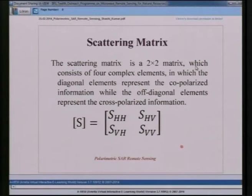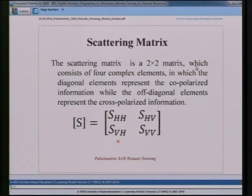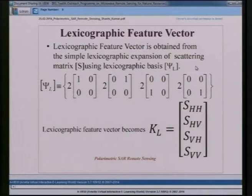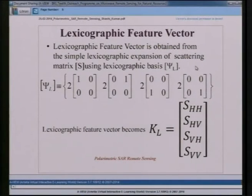For each resolution cell, a Scattering Matrix is created from all four polarimetric combinations, with all values being complex. Since it is not possible to directly extract different scattering information from the Scattering Matrix elements alone, we decompose the Scattering Matrix to retrieve different scattering information. This is model decomposition, using either the coherency matrix or covariance matrix to extract surface scattering, double bounce scattering, and volume scattering.